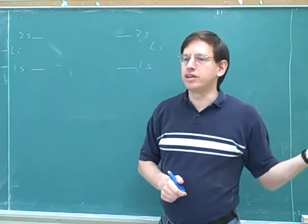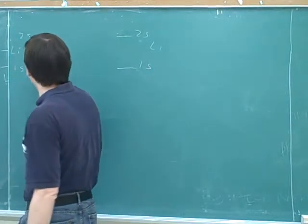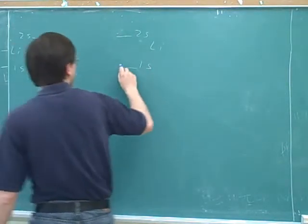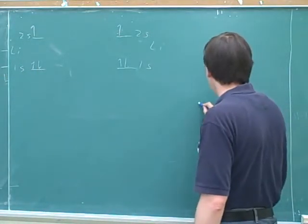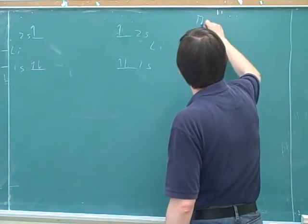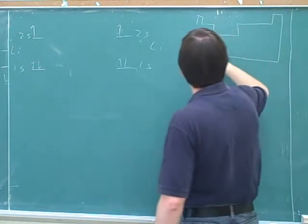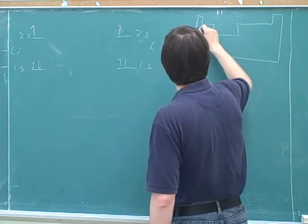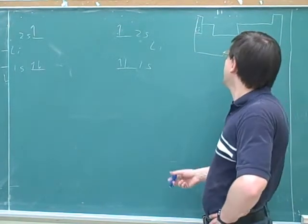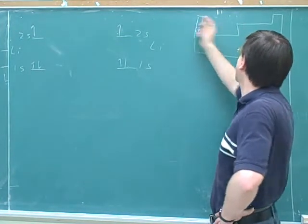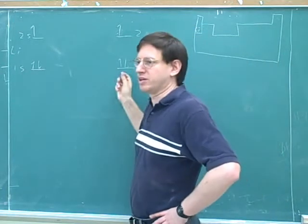Since it has three protons, a neutral lithium would have three electrons. So where should I put those? One, two, three. That just confirms what we can already see from the periodic table: lithium would put two electrons in 1S and one electron in 2S, and that's what we put in here.